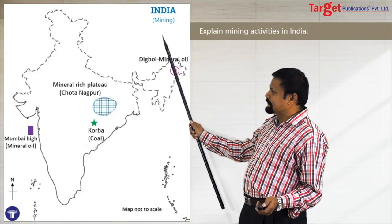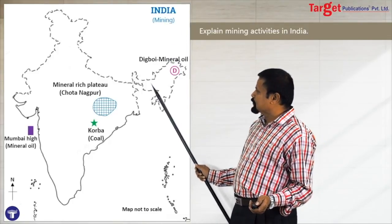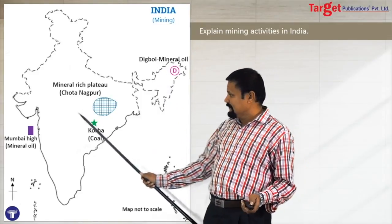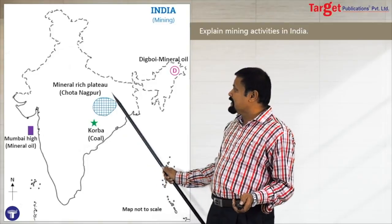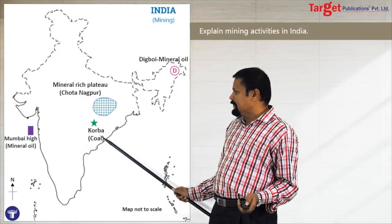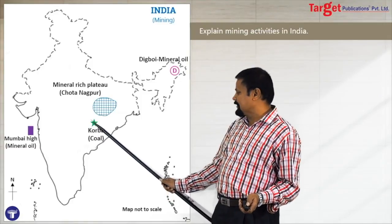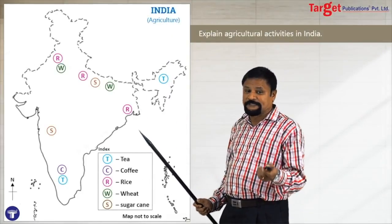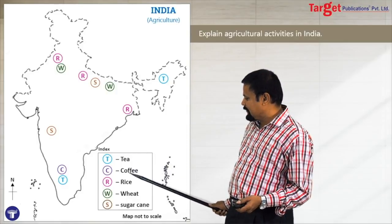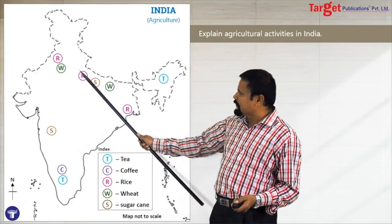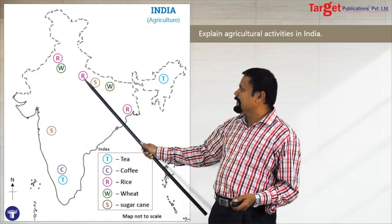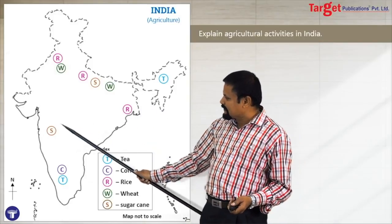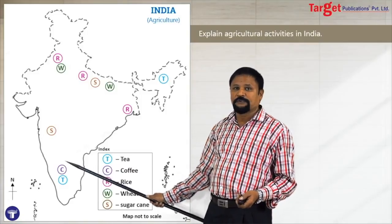For India's mining activities, show major minerals and important places — Digboi is well known for mineral oil, Mumbai High is well known for mineral oil, and Chotanagpur Plateau is India's mineral-rich plateau. Korba in Chhattisgarh is a major coal area. For India's agriculture question, show major crops: tea, coffee, rice, wheat, and sugarcane. Punjab is known for rice and wheat; UP for rice, sugarcane, and wheat; Assam for tea; West Bengal for rice; Maharashtra for sugarcane; and southern areas for coffee and tea.